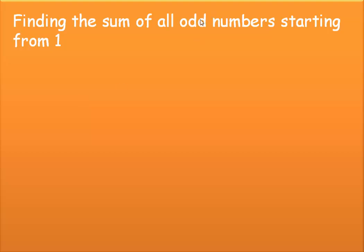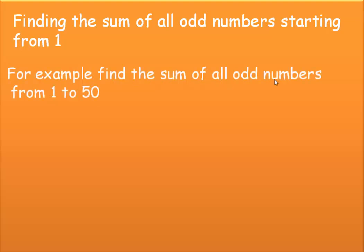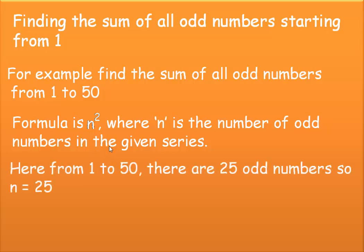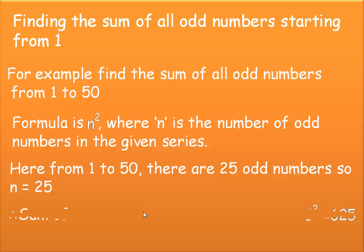First, let's see how to find the sum of all odd numbers starting from 1. For example, find the sum of all odd numbers from 1 to 50. From 1 to 50 there are 25 odd numbers. The formula to find the sum of all odd numbers is n squared, where n is the number of odd numbers in the given series. So n equals 25, and therefore the sum is 25 squared, which equals 625.